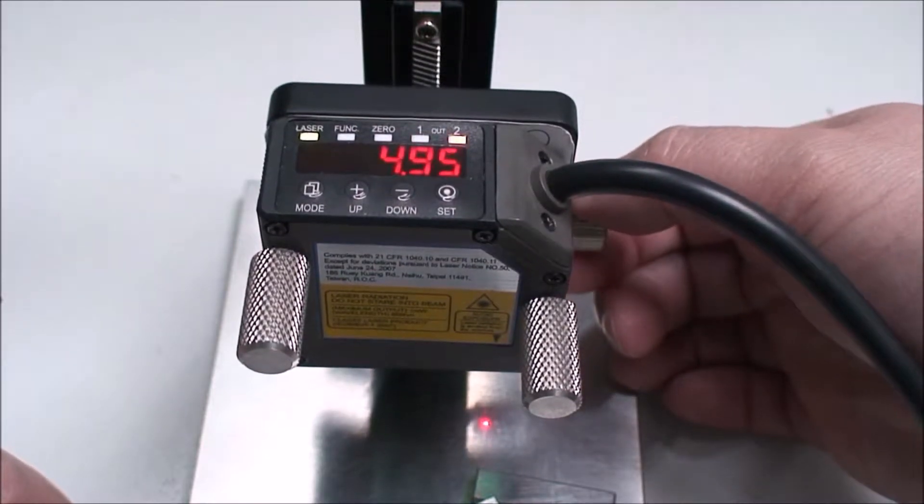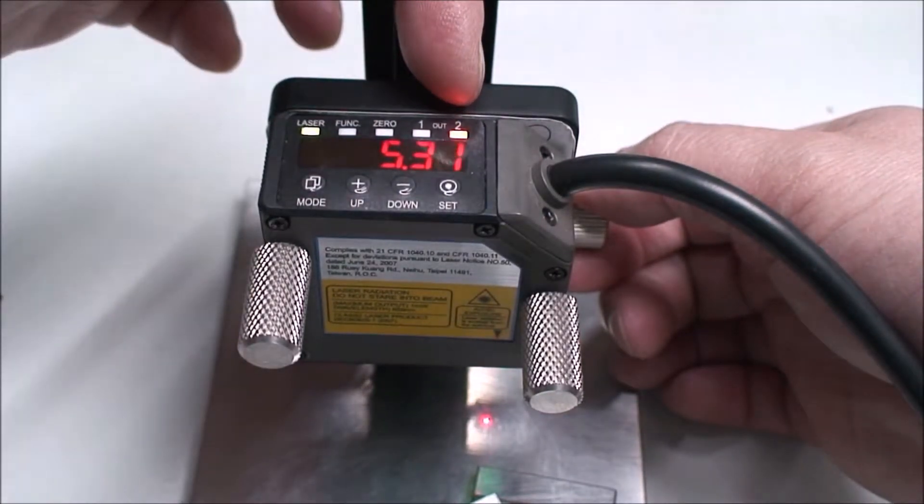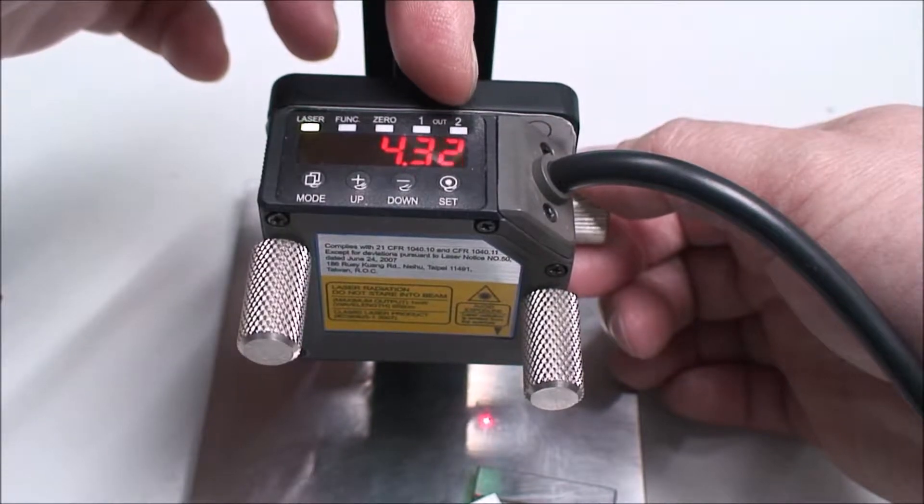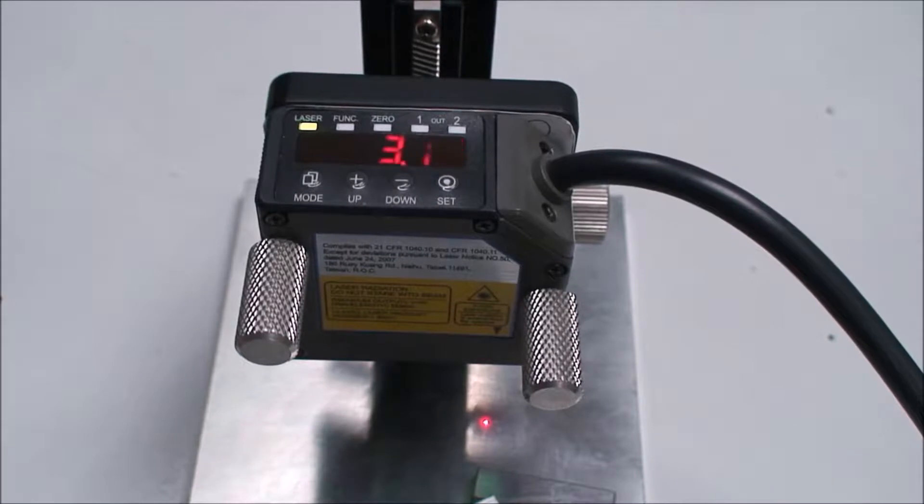It's still greater than the threshold. If we adjust the data, did you see that? If the data is smaller than 5, the output indicator will turn off. That's how it works in 1P measurement mode.